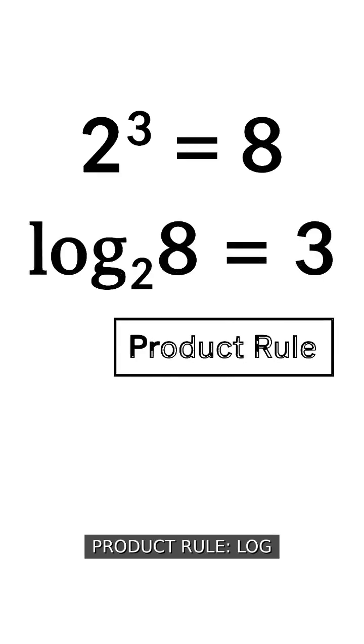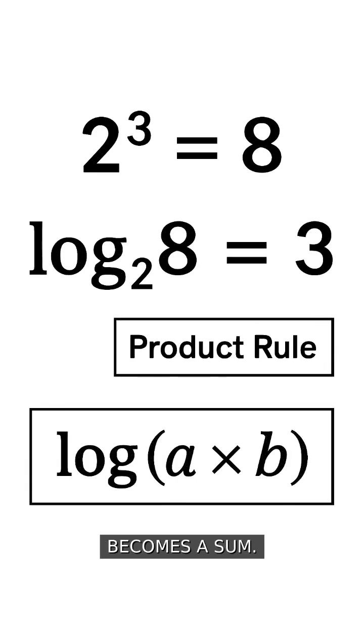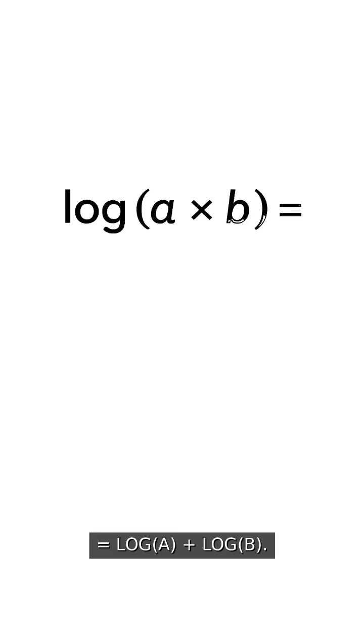Now the rules. Product rule: log of a product becomes a sum. Log of a times b equals log a plus log b.